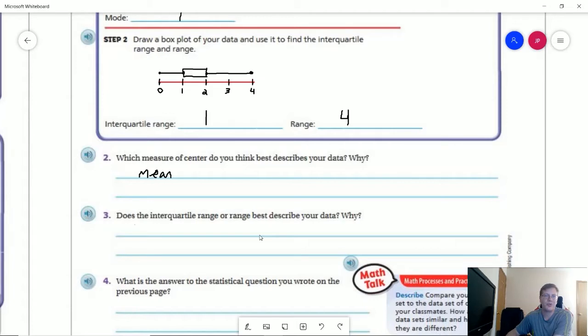Does the interquartile range or the range best describe the data? I would suggest probably the interquartile range because, again, we're more compact. And so number four, the answer to the statistical question: 1.5 pets.